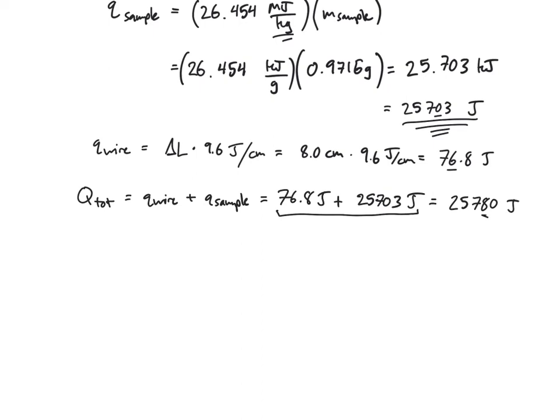Okay, now looking back in the protocol I find the following equation, that C the heat capacity of the calorimeter equals Q tot divided by delta T. So now I plug in all my values.